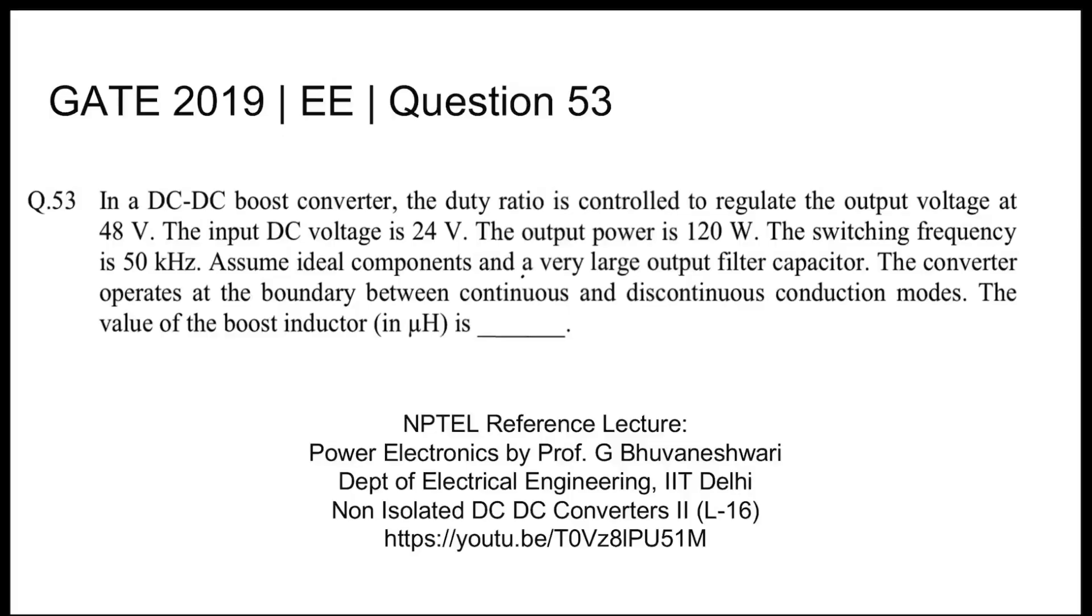This is GATE 2019 electrical question number 53. In a DC-DC boost converter, so it is a boost converter that we are talking about, the duty ratio is controlled to regulate the output voltage at 48 volts. The input DC voltage is 24 volts.